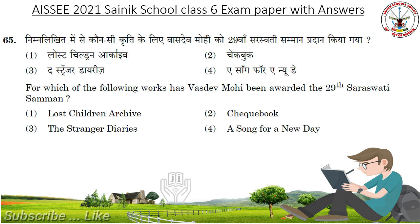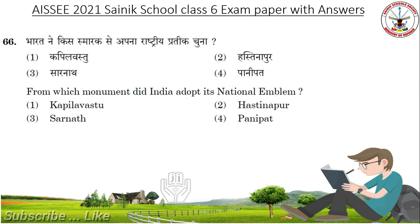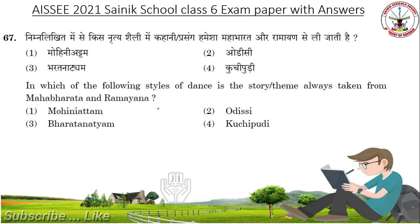For which work has Vasudev Mohi been awarded the Saraswati Samman? Answer: Checkbook. From which monument did India adopt its national emblem? In which of the following styles of dance is the story or theme always taken from Mahabharata and Ramayana? Options: Mohiniyattam, Odissi, Bharatanatyam and Kuchipudi. The answer is Bharatanatyam.